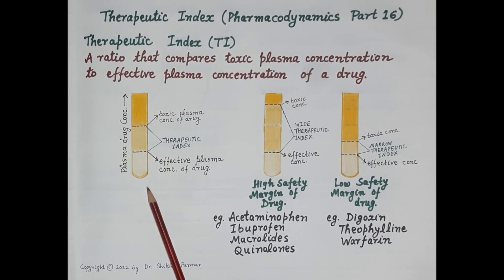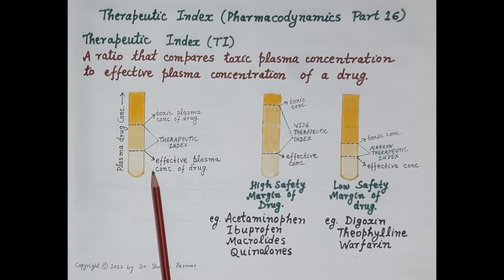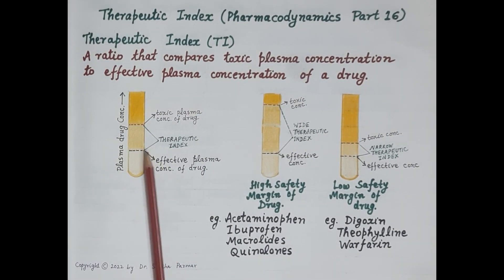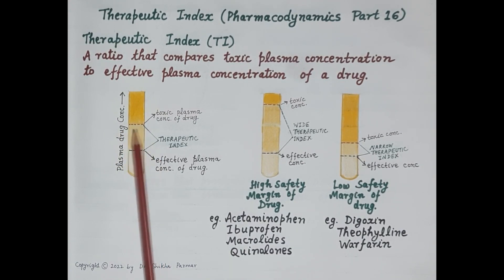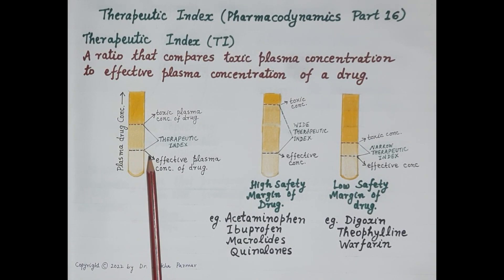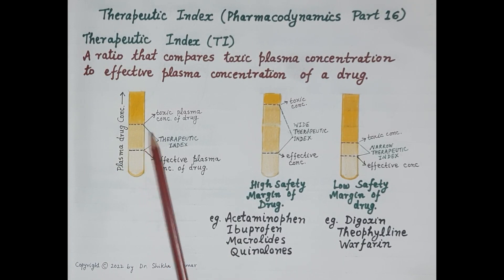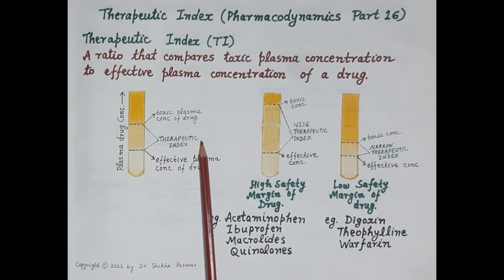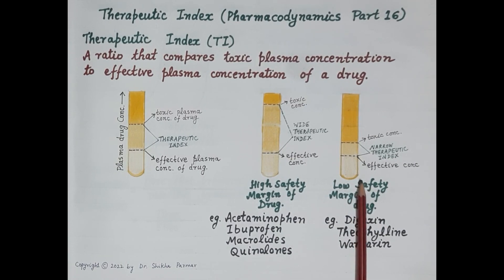The aim of therapy is to provide safe and effective treatment with minimum adverse effects. In simple terms, therapeutic index is the ratio that compares the toxic plasma concentration to the effective plasma concentration of a drug. Larger is the therapeutic index, safer is the drug.